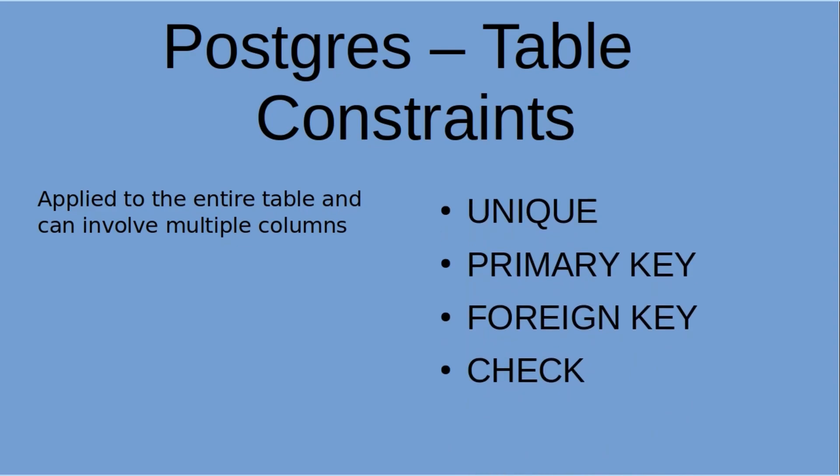Let's take a few examples of what those could be, following the basic syntax we explained in a previous video: UNIQUE, PRIMARY KEY, FOREIGN KEY, and CHECK — four in total for this example.